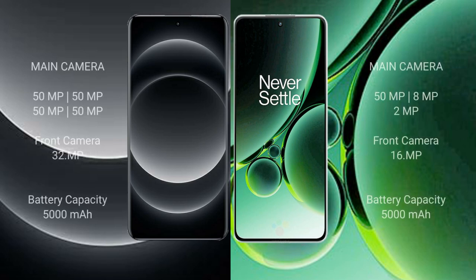Xiaomi 14 Ultra features a rear quad camera setup with 50MP, 50MP, 50MP, and 50MP lenses, and a 32MP front camera. OnePlus Nord 3 features a rear triple camera setup with 50MP, 8MP, and 2MP lenses, and a 16MP front camera.